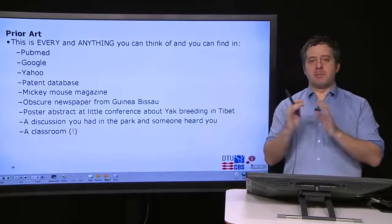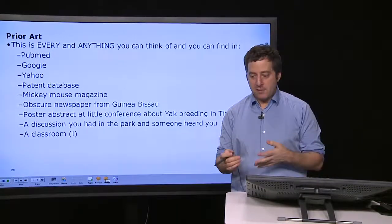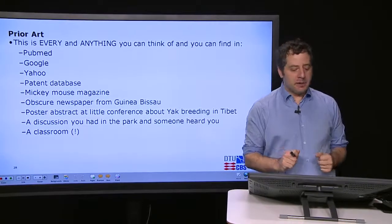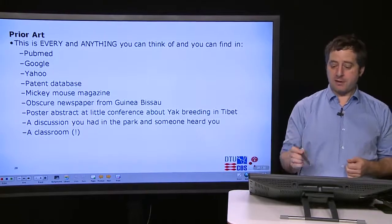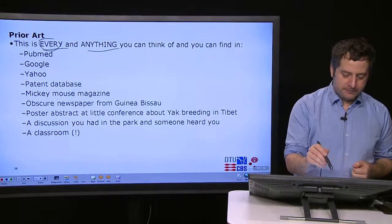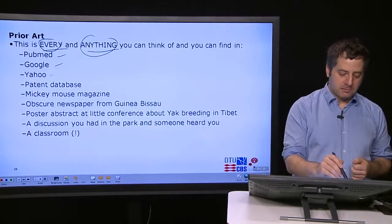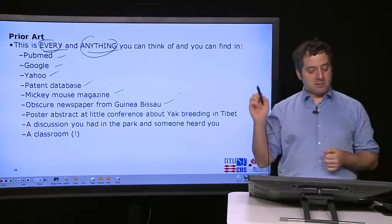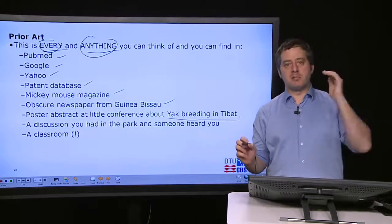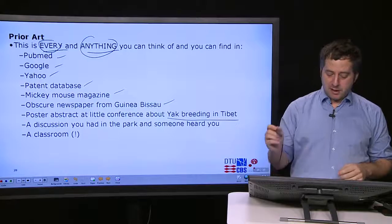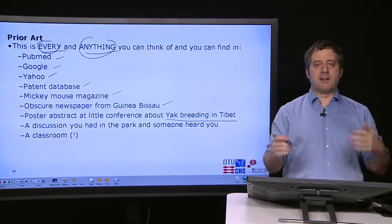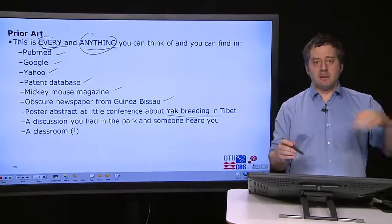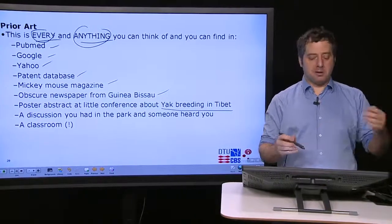I was talking before about prior art, which is in the public domain. What is prior art? One thing you will do when you have an invention or think you have an invention, you will be asked to do kind of a prior art search to see if anybody has ever come up with something like that. And prior art is basically everything and anything you can think of and you can find. Everything and anything can be PubMed, can be Google, can be Yahoo, can be a patent database, Mickey Mouse magazine. An obscure newspaper from Guinea-Bissau, a poster abstract at a little conference about yak breeding in Tibet, somebody has presented that, that's it, it's prior art, it's public domain. A discussion you had in the park, a classroom, anything, anywhere, whatever is out there is prior art and will be found out, hopefully, by a patent examiner and will be discussed as whether this is relevant and will destroy your novelty or not.